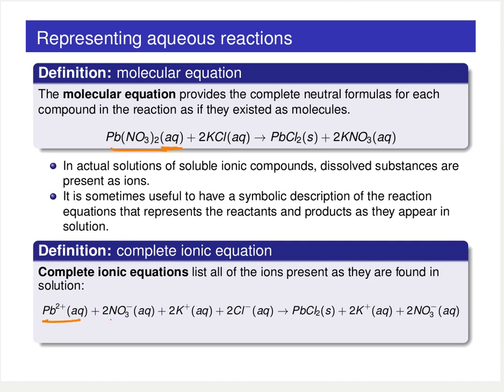If we take each reactant and product, and for any compound that has an aqueous label we break it apart into its respective ions — for example, potassium chloride aqueous breaks into its respective ions, and potassium nitrate also breaks into its respective ions.